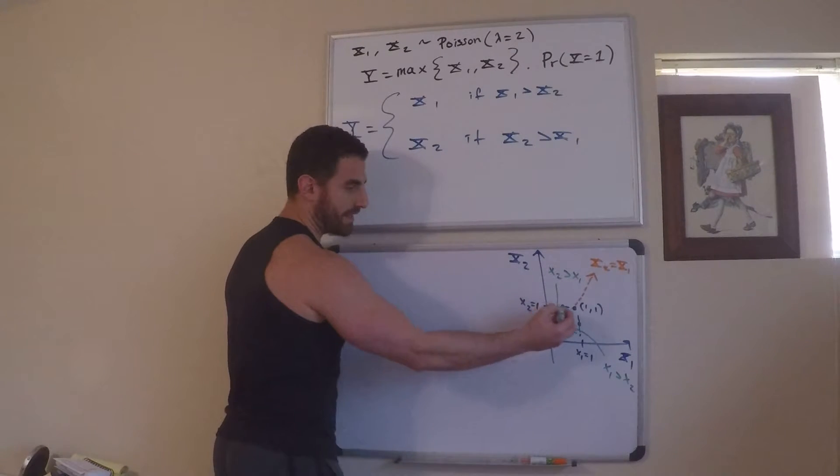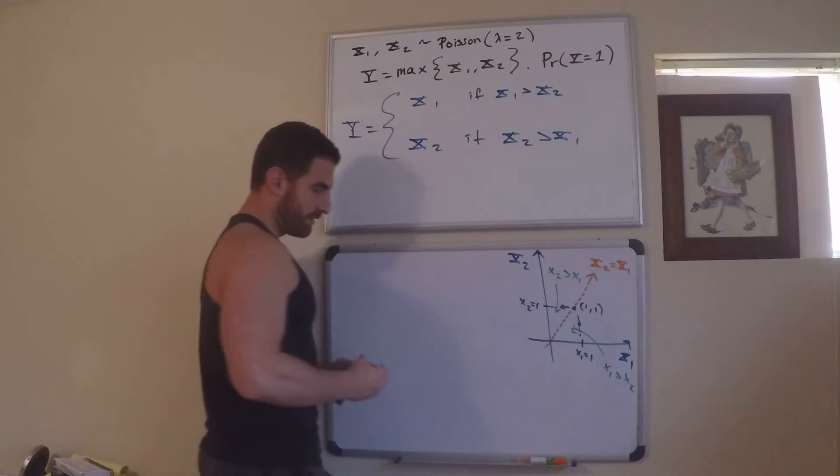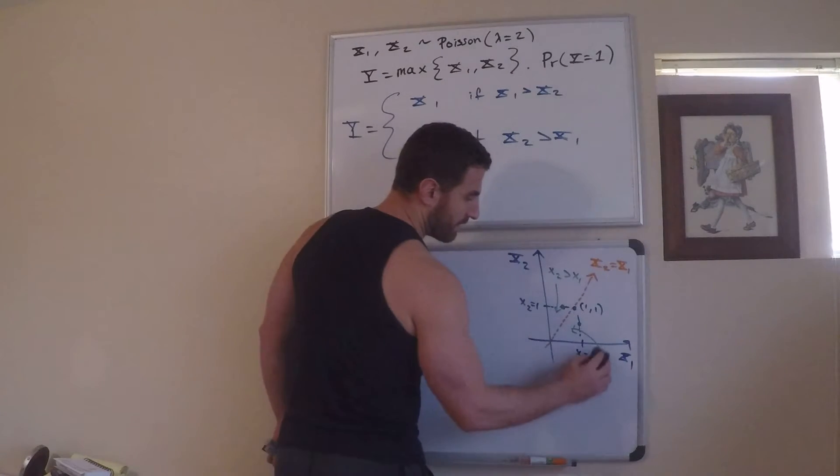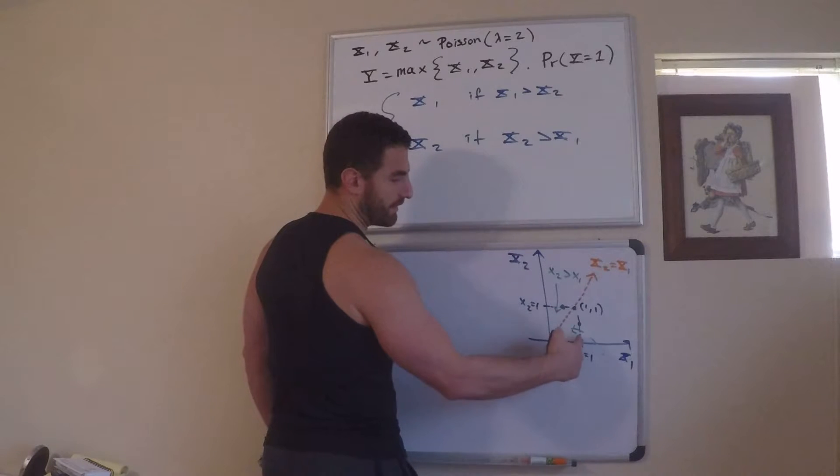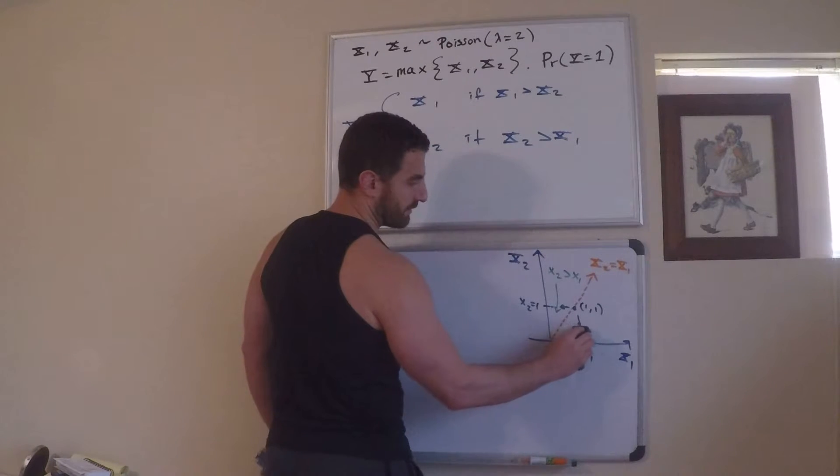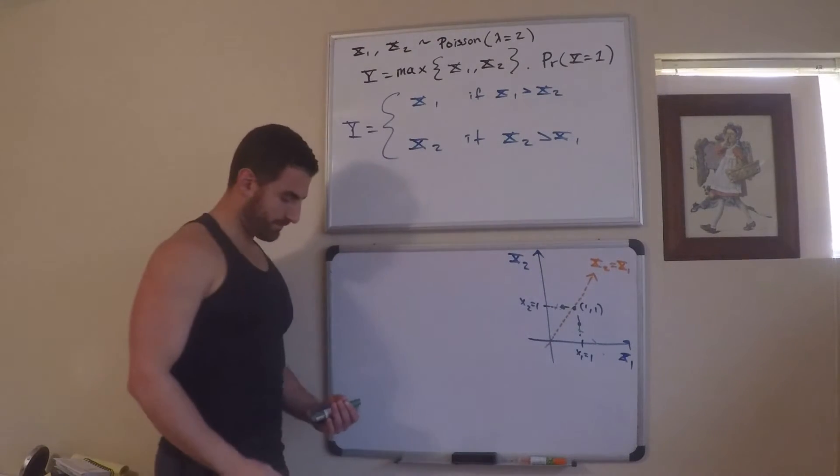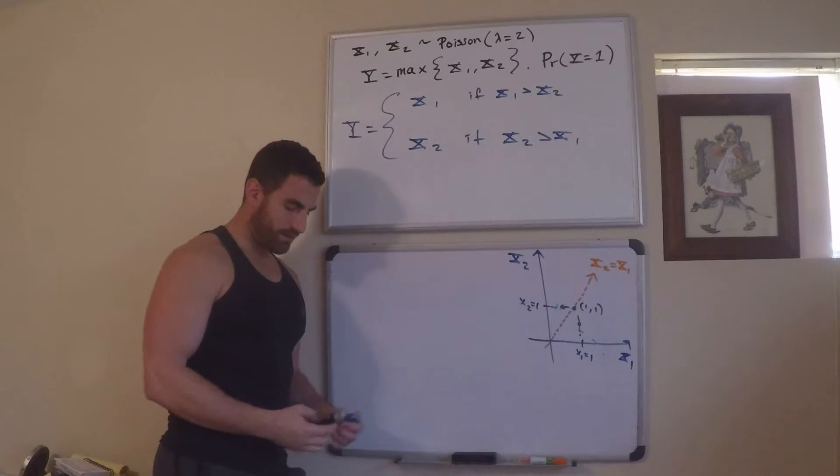And these points on the dashed line, this one could be anywhere here. These are just all the points where x2 is 1 and x1 is less than 1. All of these points on this line are where you have vice versa. So, the points here are where x1 is 1 and x2 is less than 1.